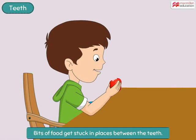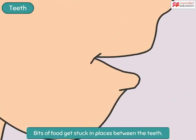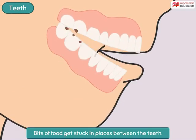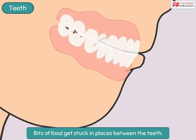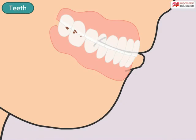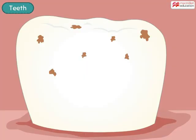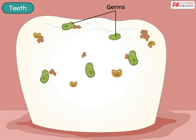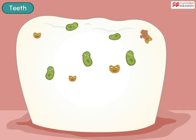When we eat something, little bits of food get stuck in the places between the teeth. These bits remain in the mouth even long after a meal is over. Tiny living things called germs start feeding on this food and start producing acid.